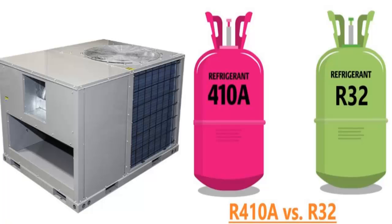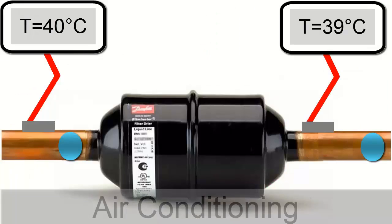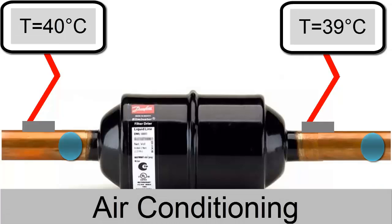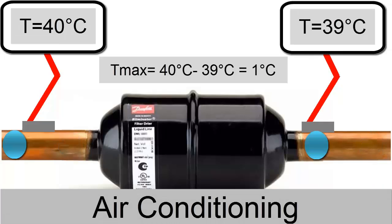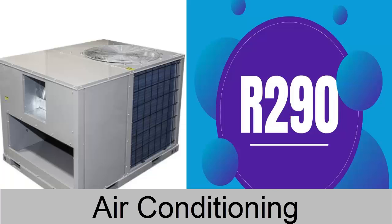For air conditioning, with R-410A and R-32 gases, the temperature drop indicating obstruction is 1 degree Celsius. With R-290, it's 1.5 degrees Celsius.